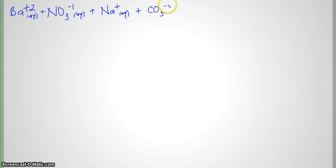Here we go. So the first thing we want to do is figure out what our reactants are. We had barium nitrate, so our ions are barium and nitrate. They're both aqueous. And then the other reactant was sodium carbonate. So I have a sodium ion that's aqueous and a carbonate ion that's aqueous.